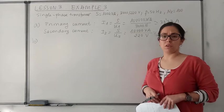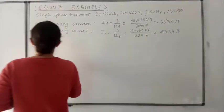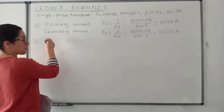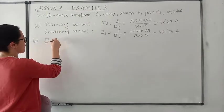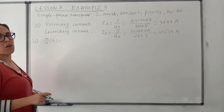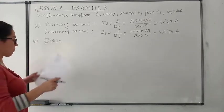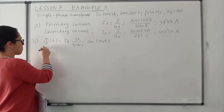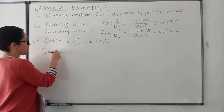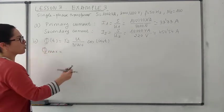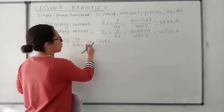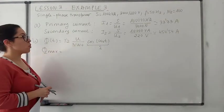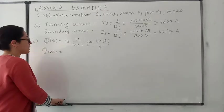The next thing that they ask in this example is the maximum magnetic flux. If you remember, when we have systems supplied in AC — as we suppose is the case here — the magnetic flux is going to follow a sinusoidal expression. As they are talking about the maximum magnetic flux, the maximum value will be when the cosine is equal to 1 or minus 1.